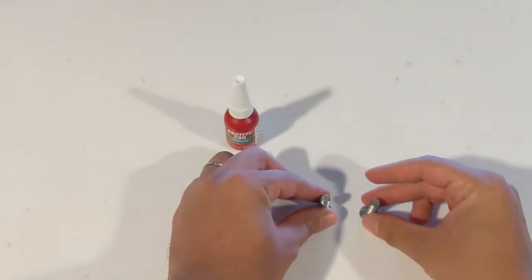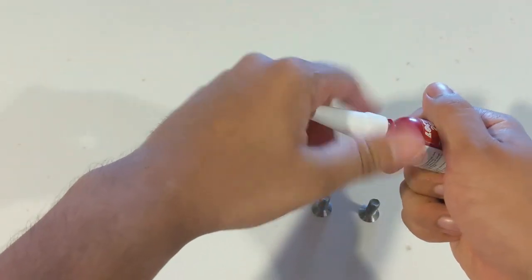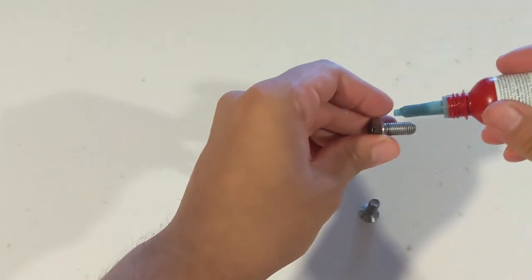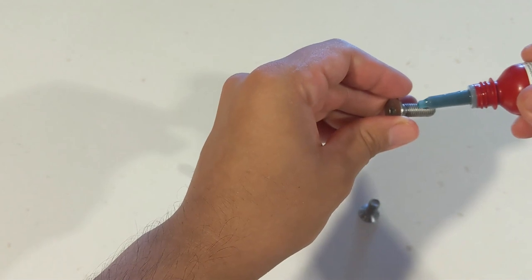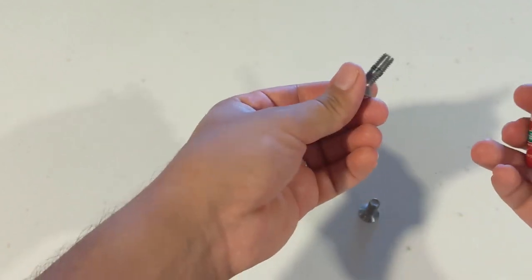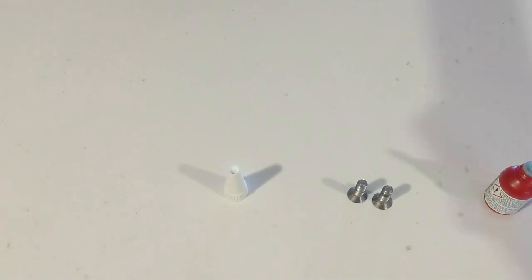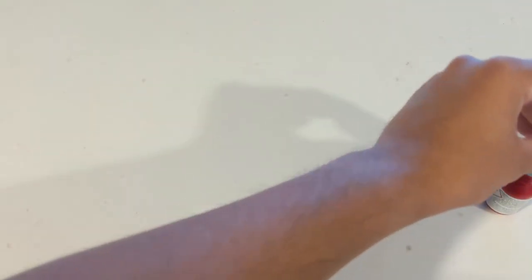Moving on to assembly, we start with our M8 screws. I'm applying some thread locker here. I'm probably doing it wrong. I'm also probably supposed to be using blue thread locker. Do let me know in the comments below. If I do know one thing from experience, it's to close bottles tightly after I use them.